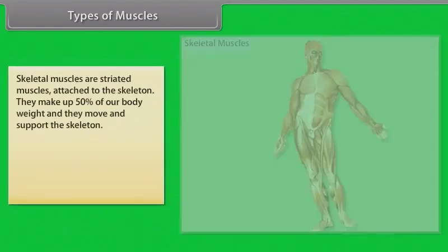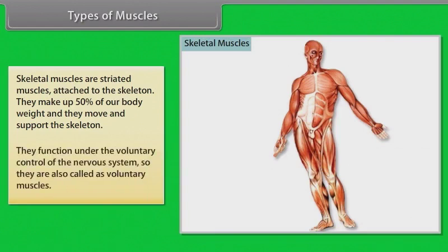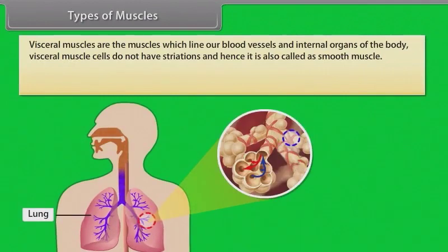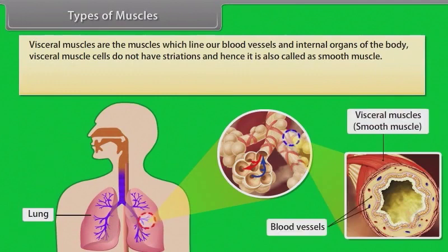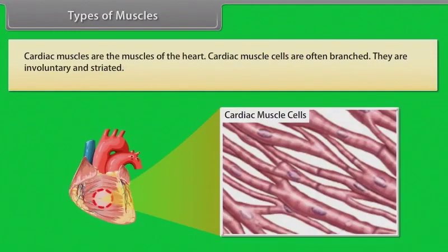Types of muscles. Skeletal muscles are striated muscles attached to the skeleton. They make up 50% of our body weight and they move and support the skeleton. They function under the voluntary control of the nervous system, so they are also called voluntary muscles. Visceral muscles line our blood vessels and internal organs. They do not have striations and are called smooth muscles. They are involuntary. Cardiac muscles are the muscles of the heart — involuntary and striated, with often branched cells.